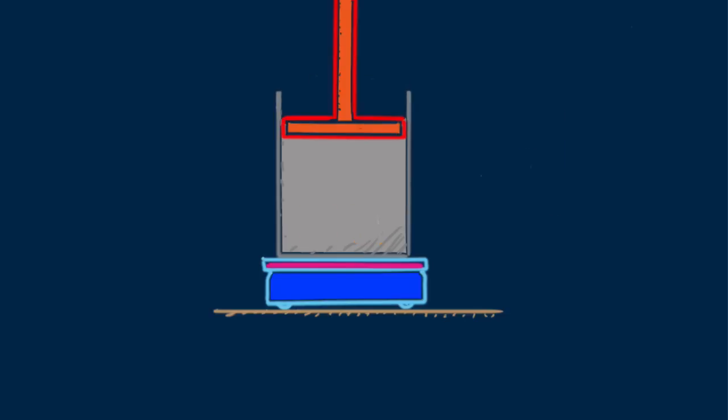If the can is fitted with a movable piston, then the heated air can do mechanical work as it expands and pushes the piston upward. This ability to do mechanical work comes from the energy you put in to begin with.